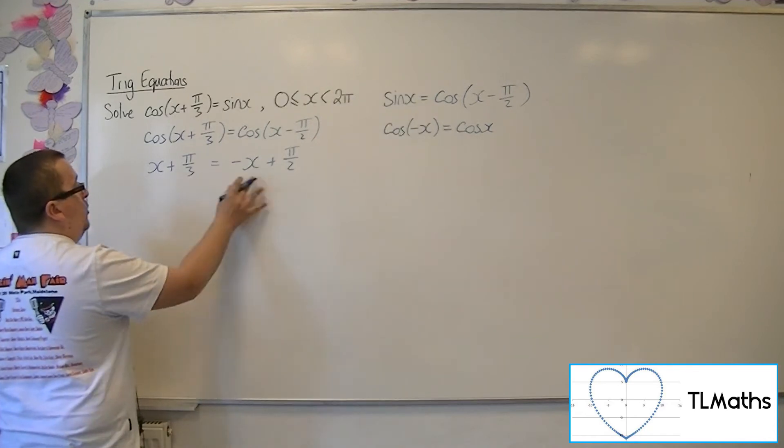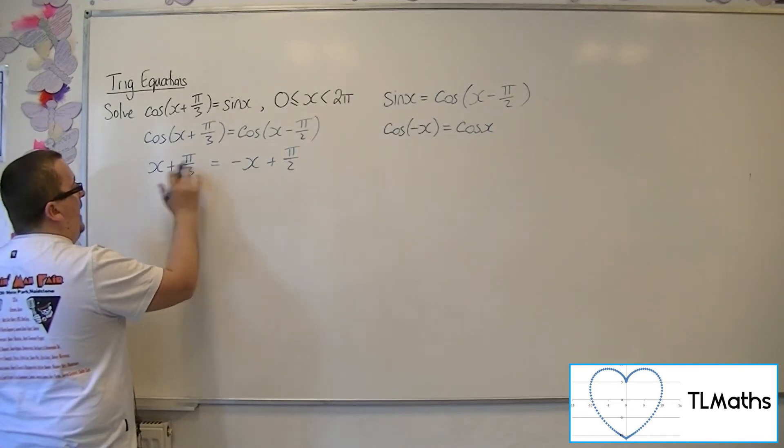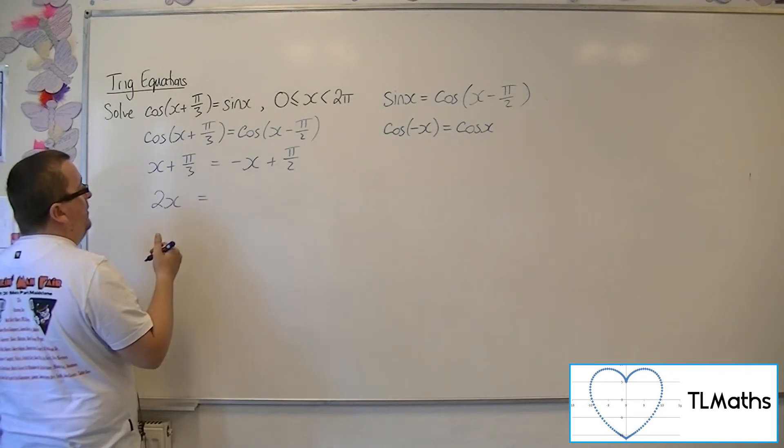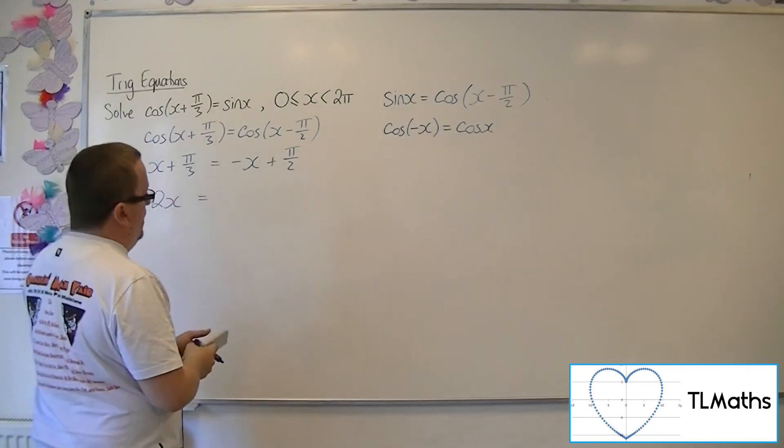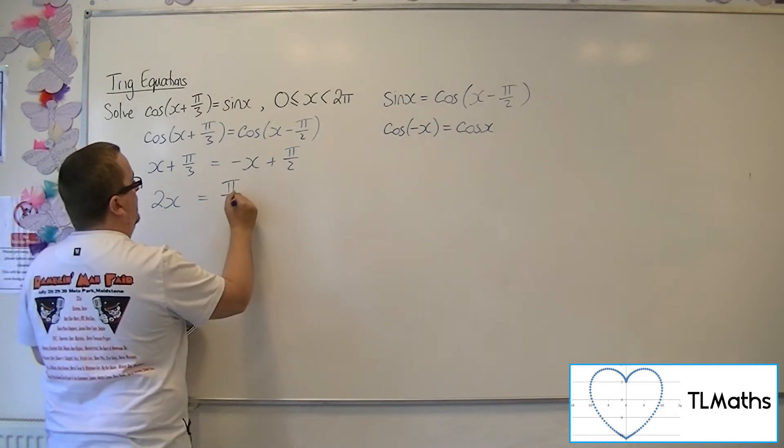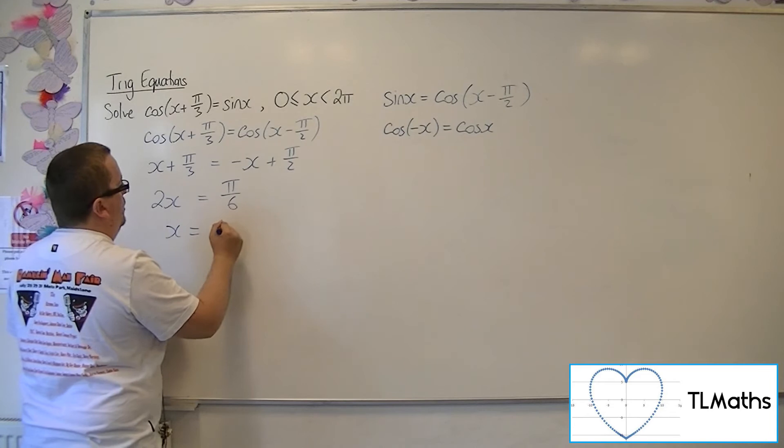So now I have an equation to solve. Add the x's to both sides. Then subtract pi over 3 from both sides. So pi over 2 take away pi over 3 is pi over 6. And so x is pi over 12.